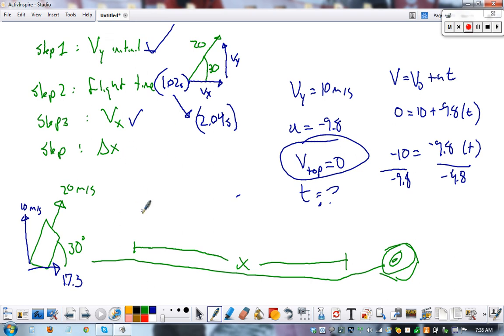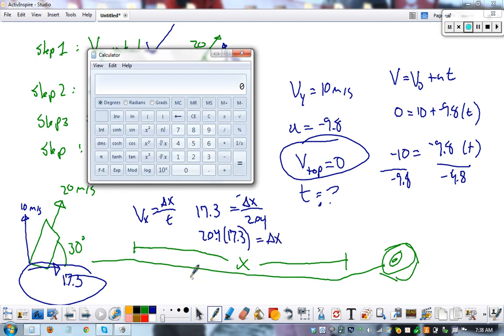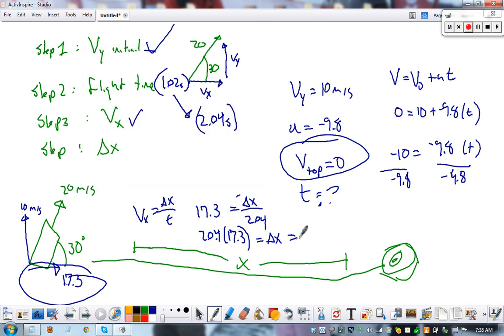Now to find our change in distance. Velocity in the x equals what we want over time. 17.3, the forward velocity, equals what we want over 2.04. 2.04 times 17.3 equals our answer. That's 34.6 meters. So we will hit a target that far away given this number. Those are the two types of problems you're going to see on our quiz on Monday.